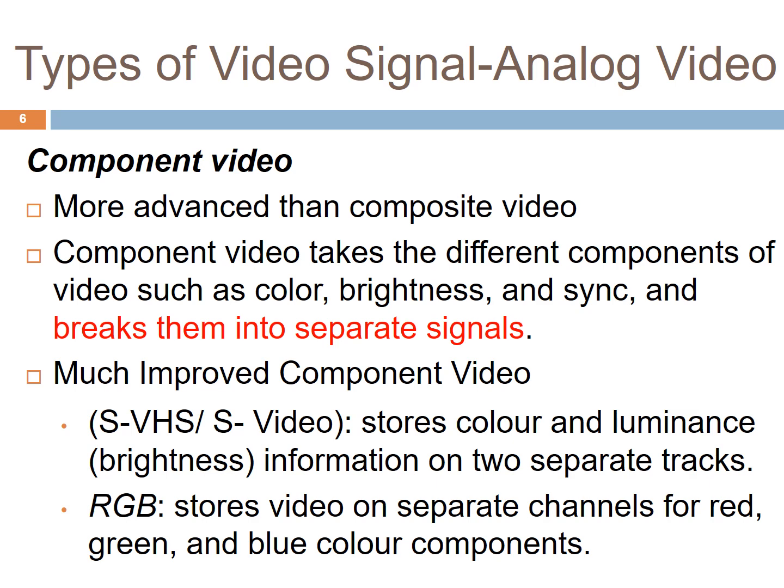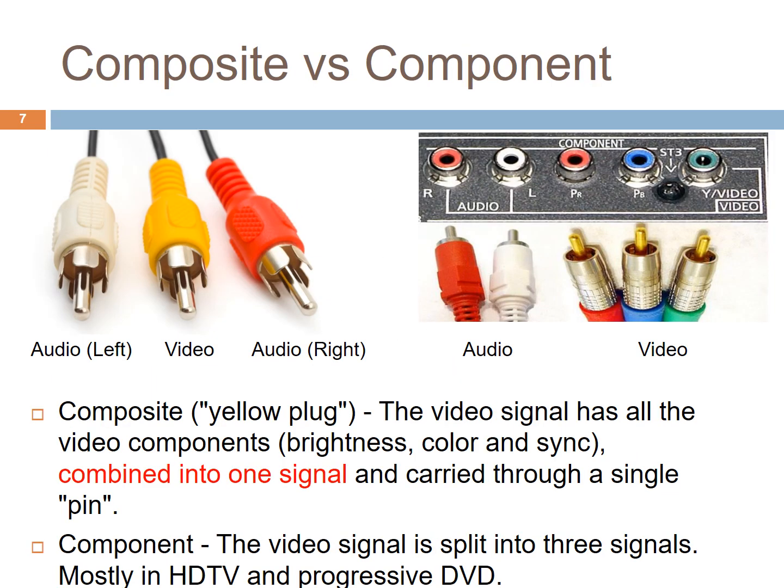Another type is component video. Component video is more advanced, where it takes different components of video such as brightness, color, and synchronization into separate channels — it breaks them into separate signals. You can spot the difference at your old Astro TV box or video player. Composite video requires only one cable for video, which is the yellow plug, while component video breaks the video into red, green, and blue plugs. Normally you can find this type of cable for HDTV and progressive DVD.